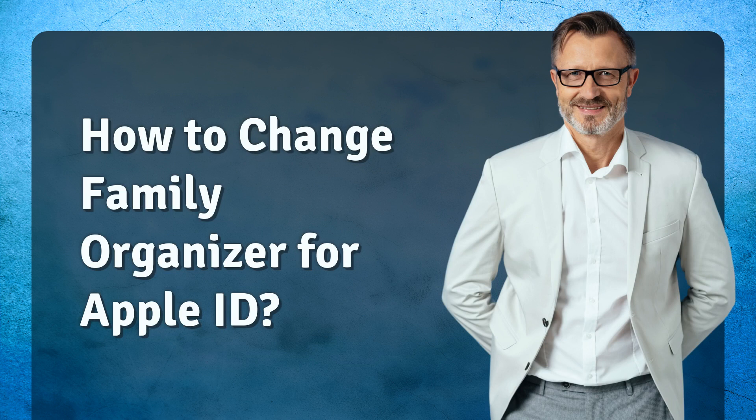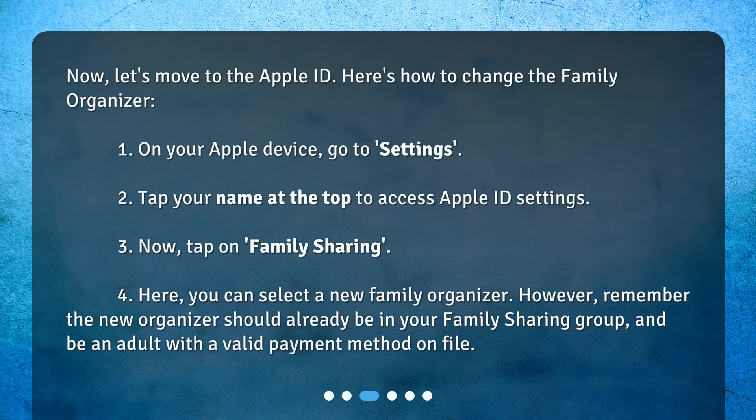How to change the family organizer for Apple ID? Now, let's move to the Apple ID. Here's how to change the family organizer. 1. On your Apple device, go to Settings. 2. Tap your name at the top to access Apple ID settings. 3. Tap on Family Sharing. 4. Here, you can select a new family organizer. However, remember the new organizer should already be in your family sharing group and be an adult with a valid payment method on file.